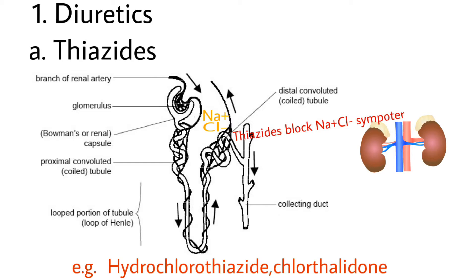Thiazides act on the sodium chloride symporter and block them. Because of this blocking, sodium ions cannot be reabsorbed by the distal tube, leading to a decrease in blood pressure. Examples of Thiazides are hydrochlorothiazide and chlorthalidone.